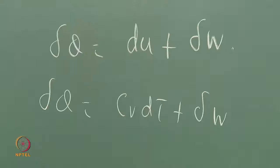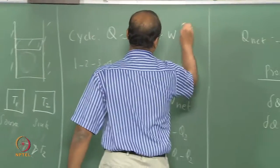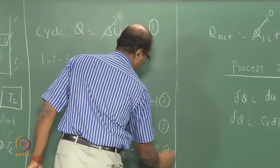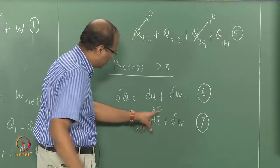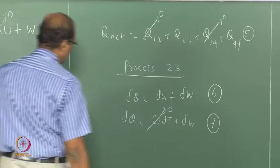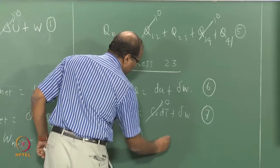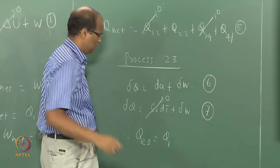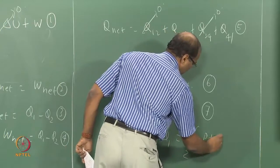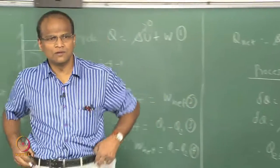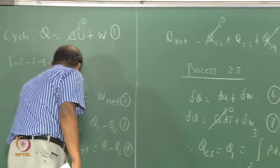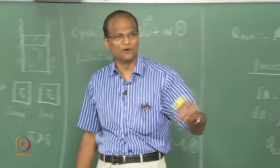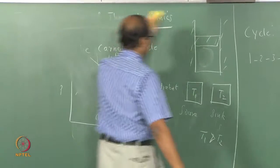What is C_V dT of process 2-3? It is an isothermal process, so C_V dT equals zero. Therefore Q1 — that is Q_{2-3} which we call heat added to the cycle — is the relevant quantity. For an ideal gas, P equals RT over V. We can write it per unit mass. The entropy calculation proceeds from here.